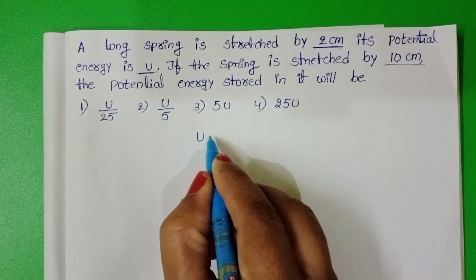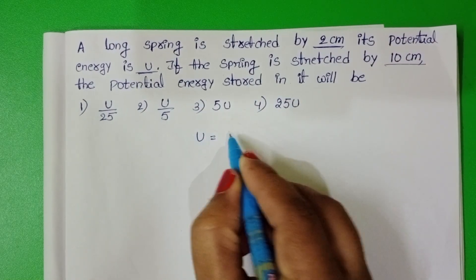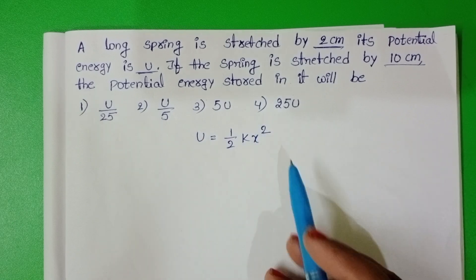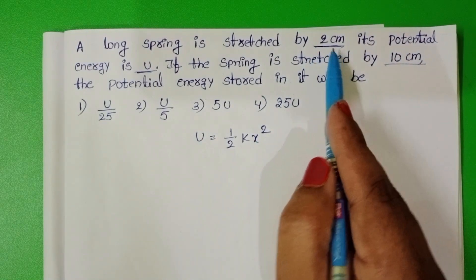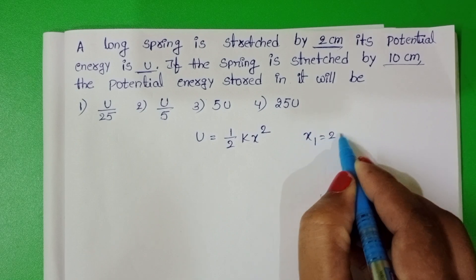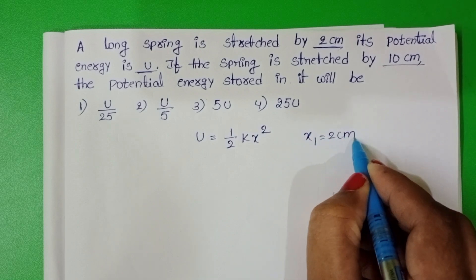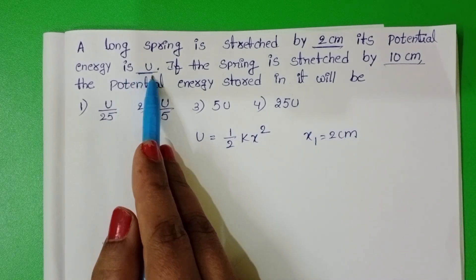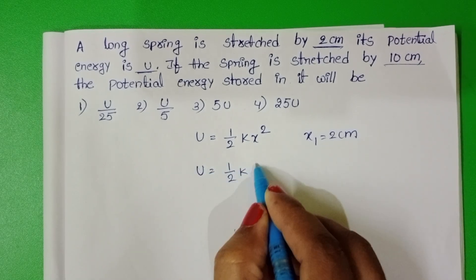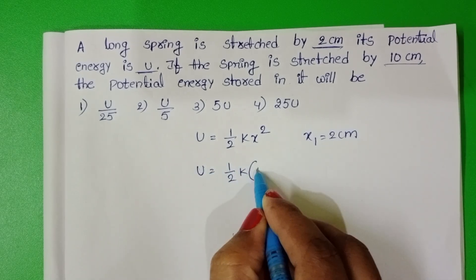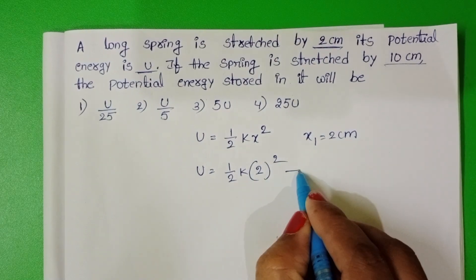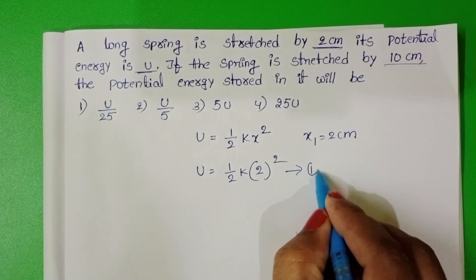The formula to find the potential energy is U equals half k x squared. Initially the spring is stretched 2 cm, so x1 equals 2 cm and potential energy is U. So U equals half k into 2 whole squared. Take this as equation 1.